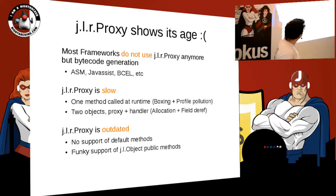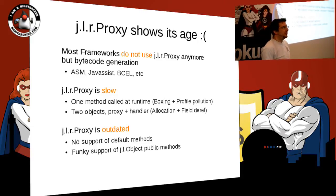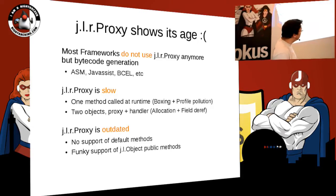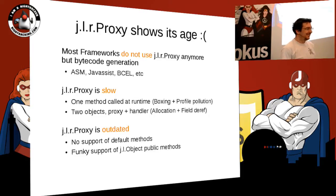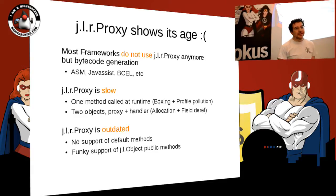Why is java.lang.reflect.Proxy slow? You have profile pollution. Given the way the interface is done, you have mandatory boxing of parameters and arguments. You have two objects — the proxy object and the handler object — which means you pay allocation twice, with pointers on top of pointers. And it's worse: the java.lang.reflect.Proxy doesn't support default methods at all.